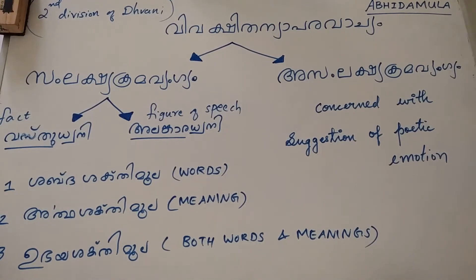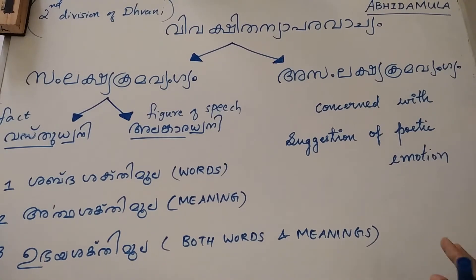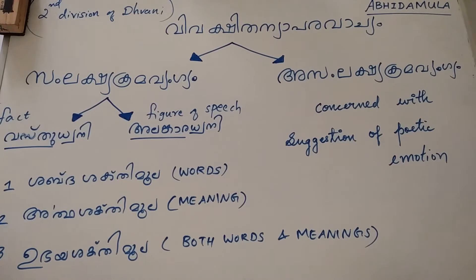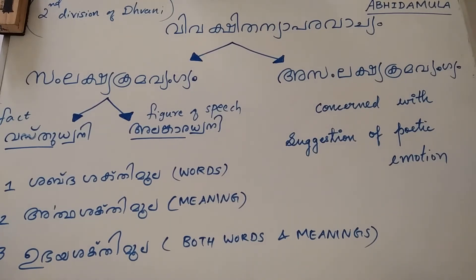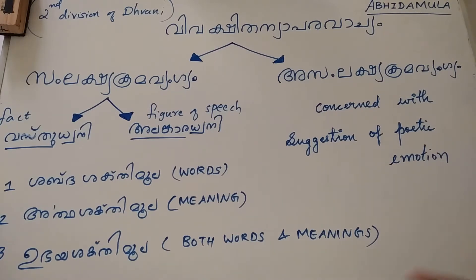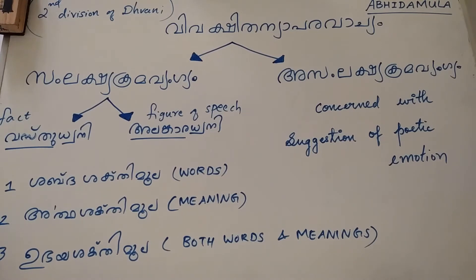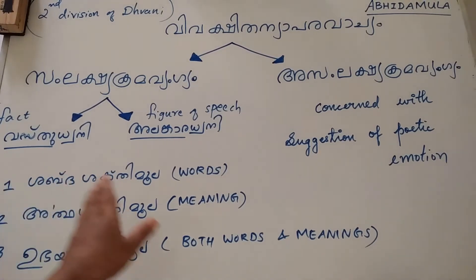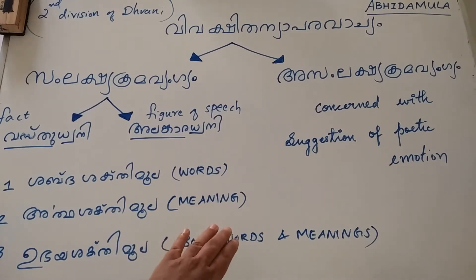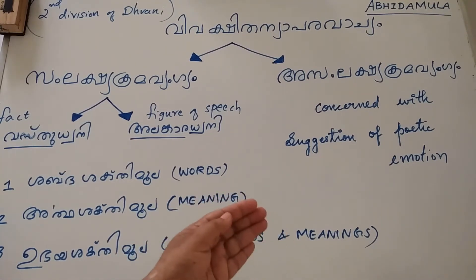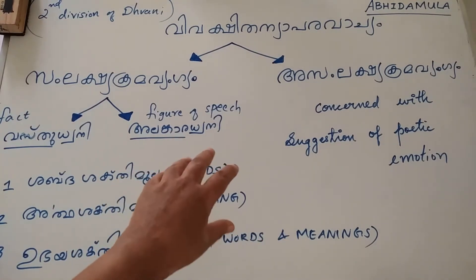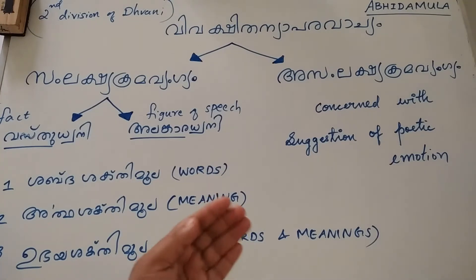Here we cannot perceive the stages which come in between the perception of the primary sense and the perception of the suggested sense. There is a primary sense and there is a suggested sense, but what happens in between these two is not concretely perceived — they are imperceptible. So the intermediate stages between the primary or expressed sense and the suggested sense are rather imperceptible.